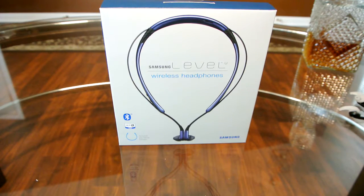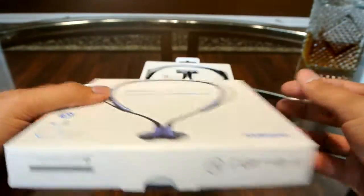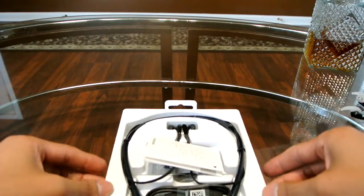Here today I wanted to show you an unboxing of the Samsung Level U wireless headphones. These are around the neck type of headphones. So here's the box that came in. So onto the packaging itself.